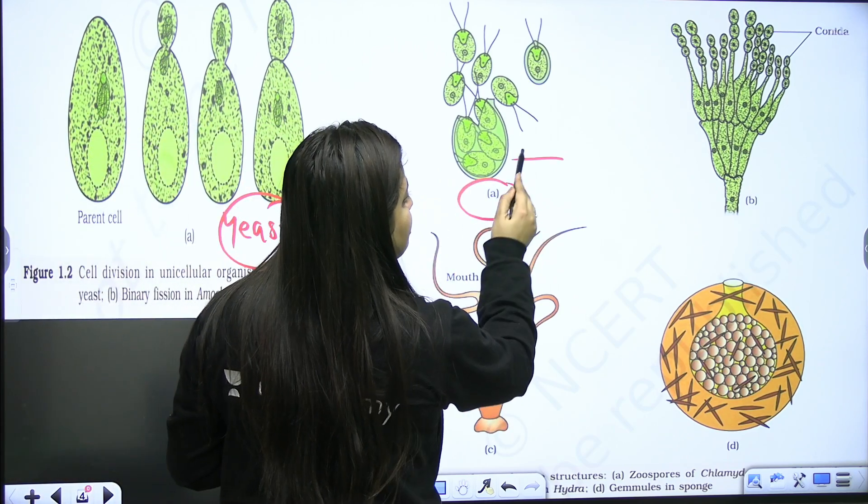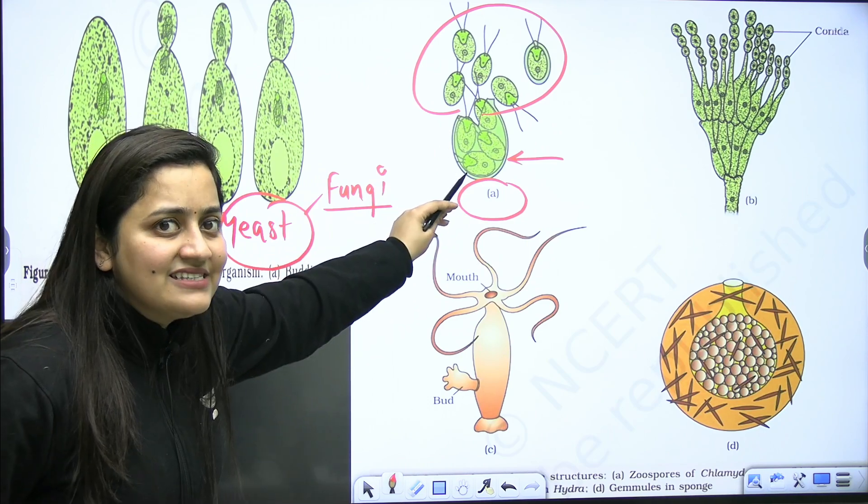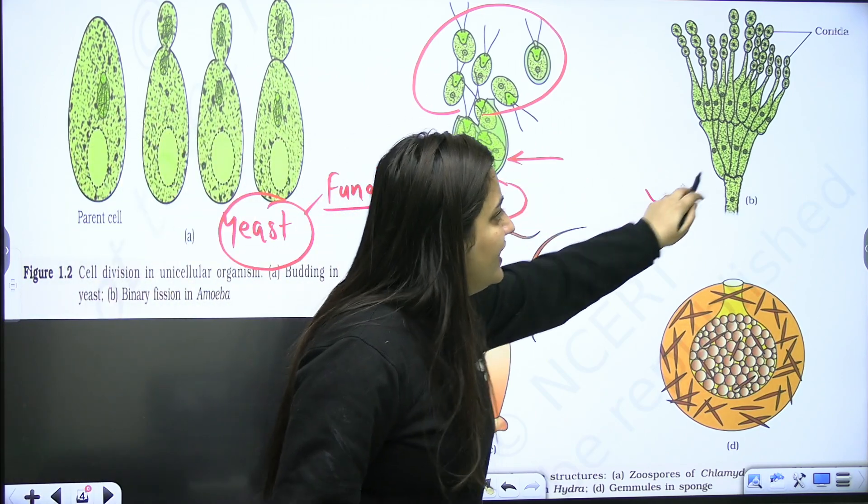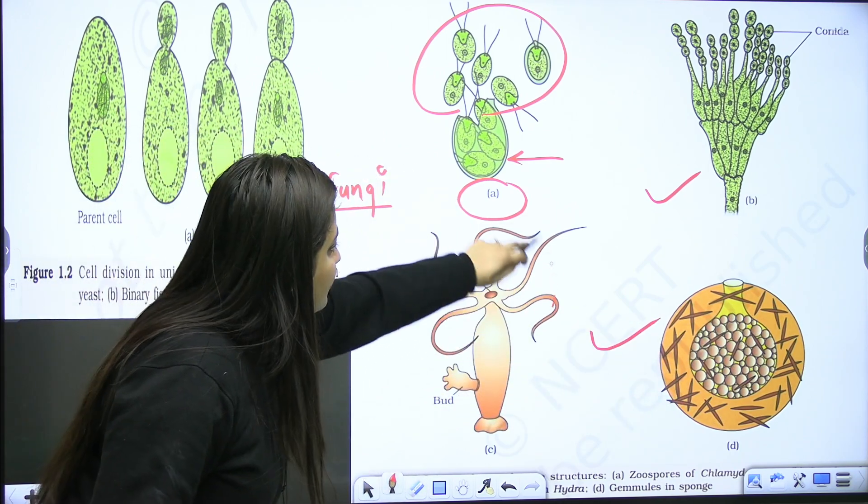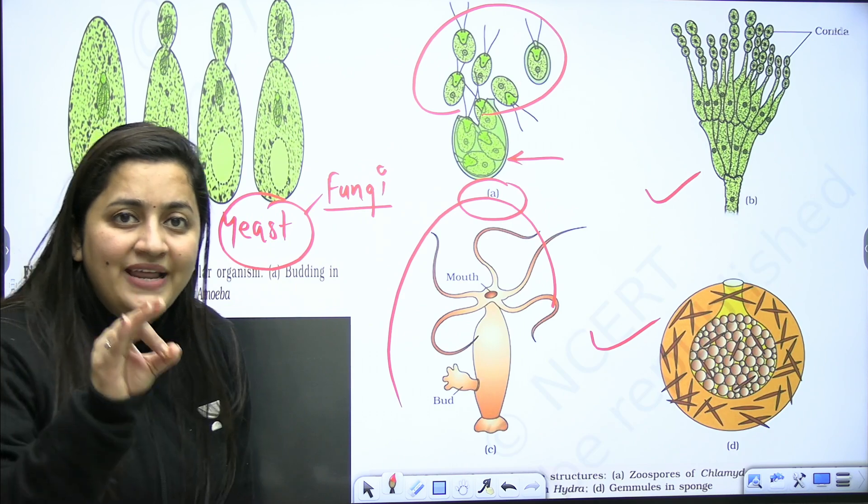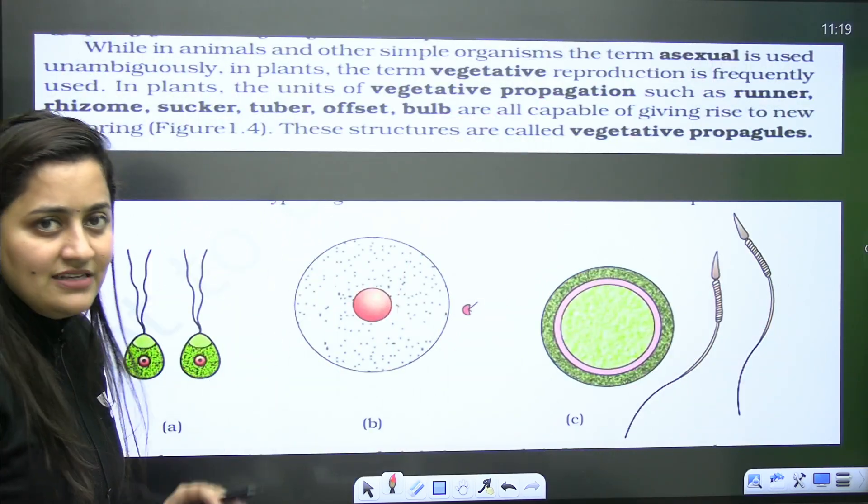Now move to the next part. See, this is in the case of yeast, and we know we still study fungi in our syllabus. They might not directly ask you the example, but they might give you the picture and ask in which particular fungus we will see budding. This is the zoosporangium, these are zoospores. Again, we discuss it in plant kingdom. Conidia we discuss in fungi. These gemules we discuss in sponges and hydra.